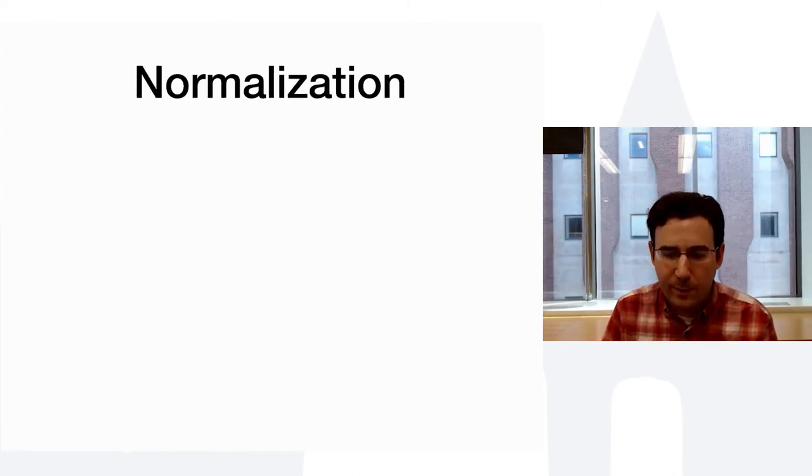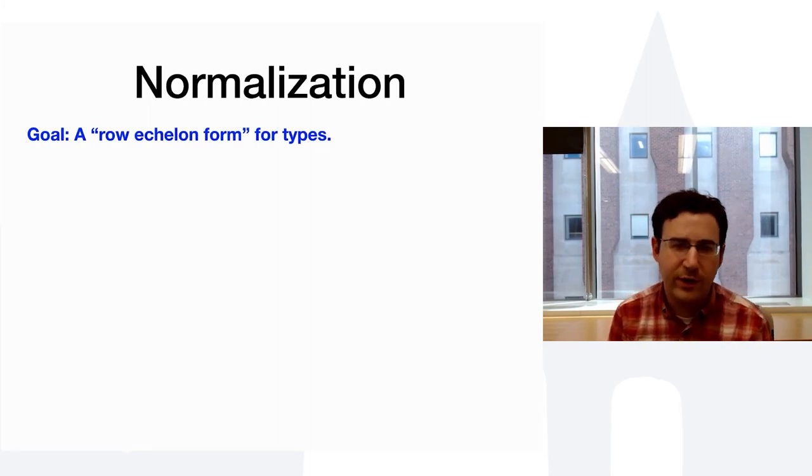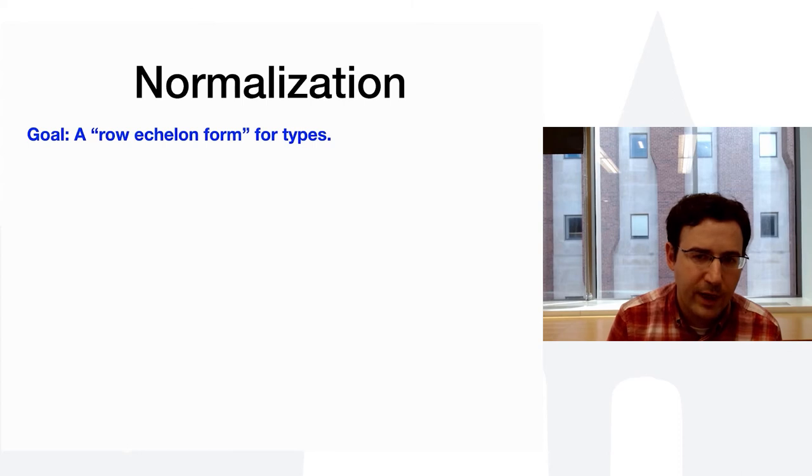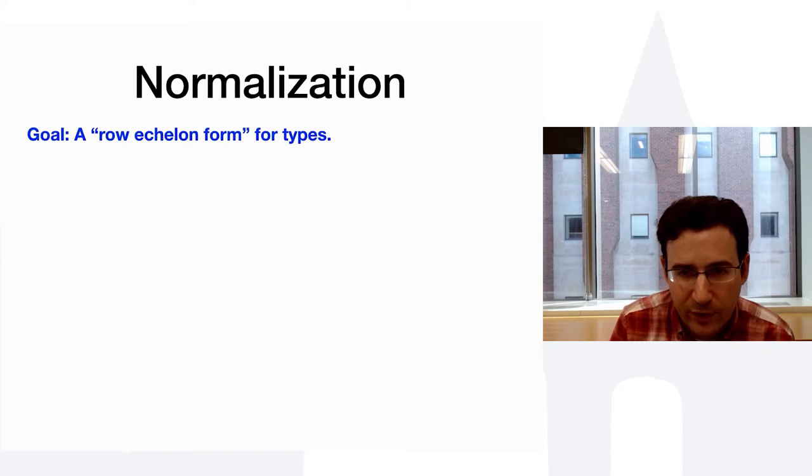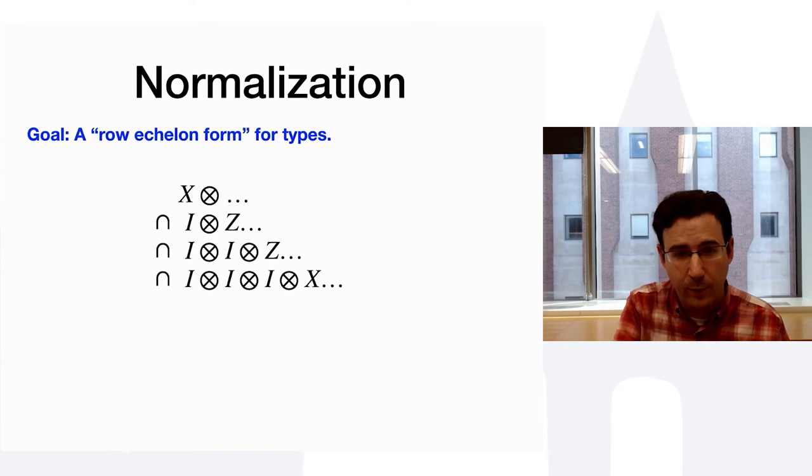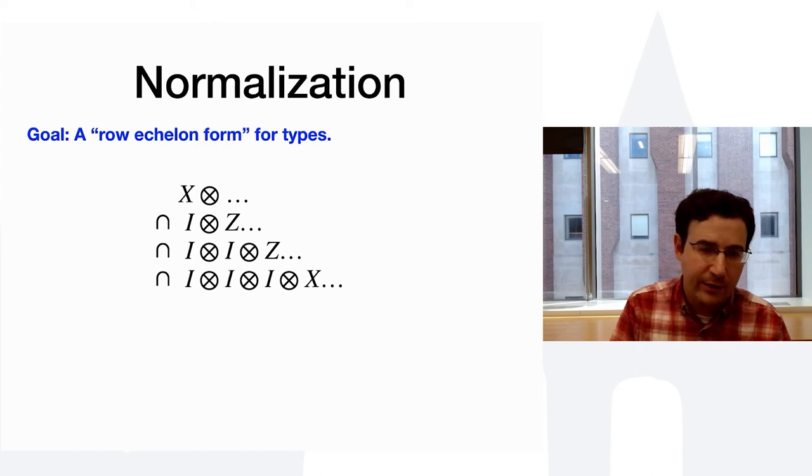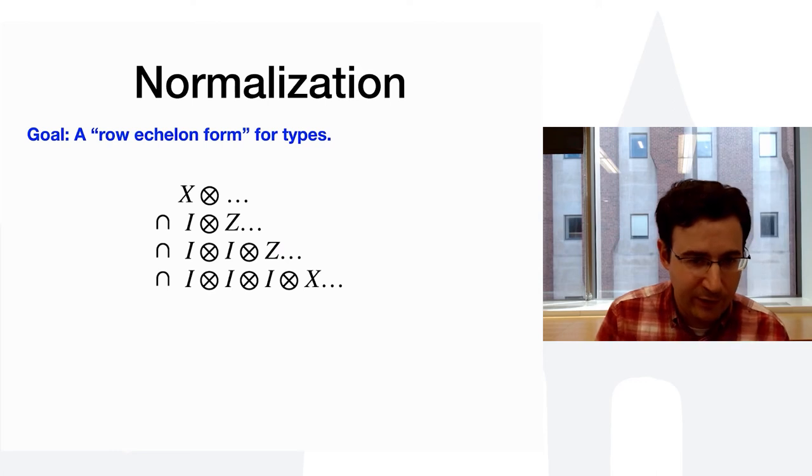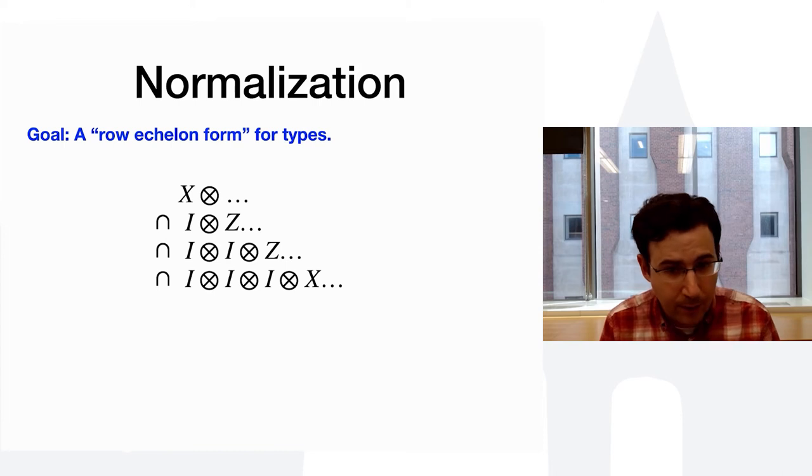And I'll show you that we can also deal with other arbitrary gates, but T suffices to give us universality. So, let's start by normalization. With normalization, our goal is to have a sort of row echelon form for types. I'm kind of making correspondence to what's called the check matrix representation of these stabilizers. So, here basically, what we want is we want this sort of diagonal-looking intersection type where we have an x in the first column, an x or z in the second column, x or z in this third column, and everything below there is going to be i's. You can have, in principle, an x and a z in the same column, but you can't have more than one x or more than one z.